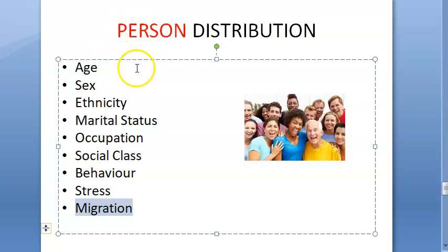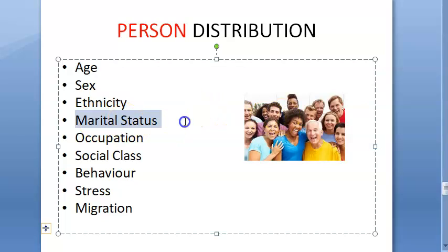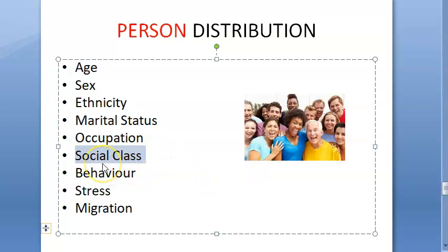Let's try to understand it without the textbook. Different ages can have different diseases. Gender matters — females are affected with some kinds of diseases, men with others. Ethnicity: some races have more of certain diseases. Marital status can relate to gynaecology and obstetrics. Occupation matters — we have seen pneumoconiosis and occupational diseases. Social class: higher social class people tend to have diabetes and hypertension, while lower social class may have communicable diseases due to hygiene issues.